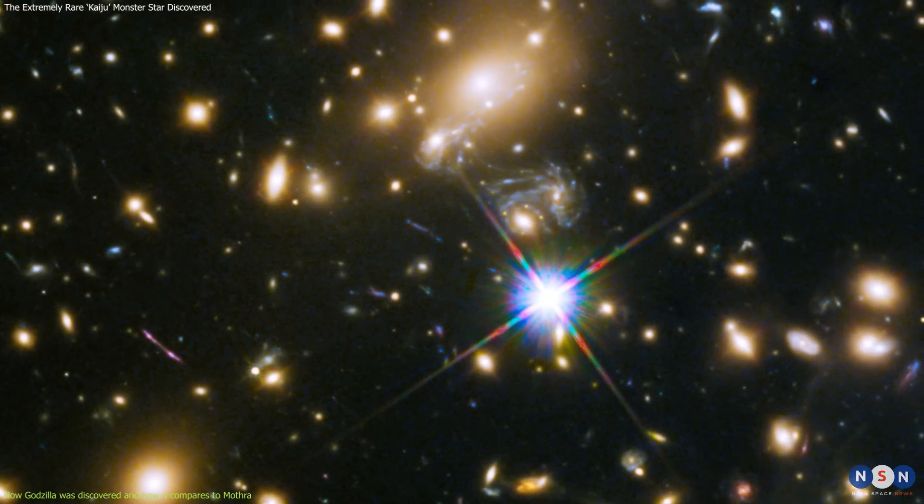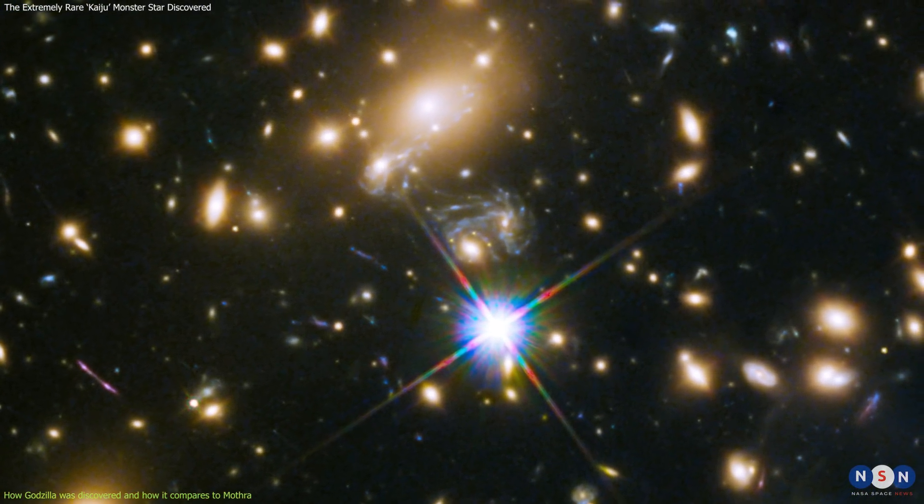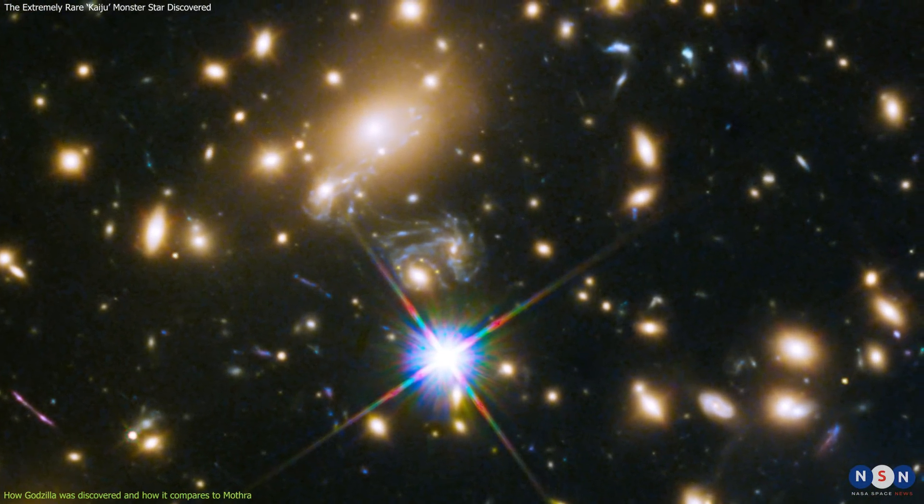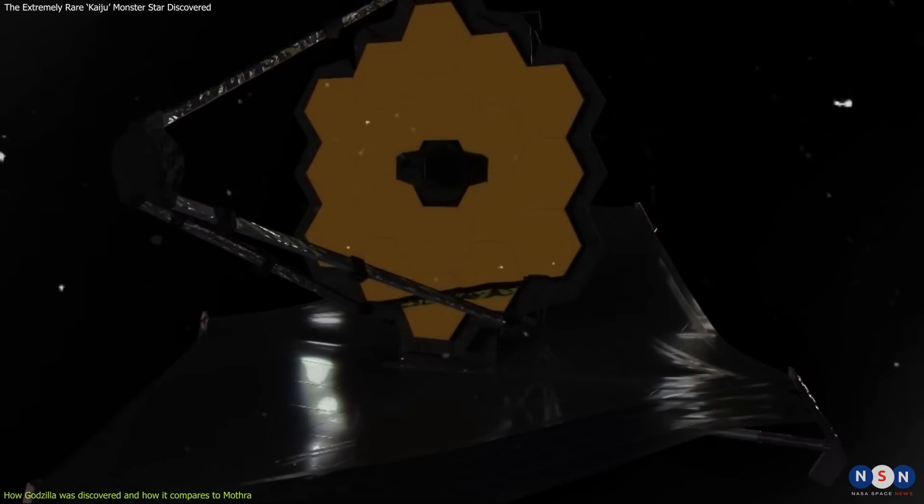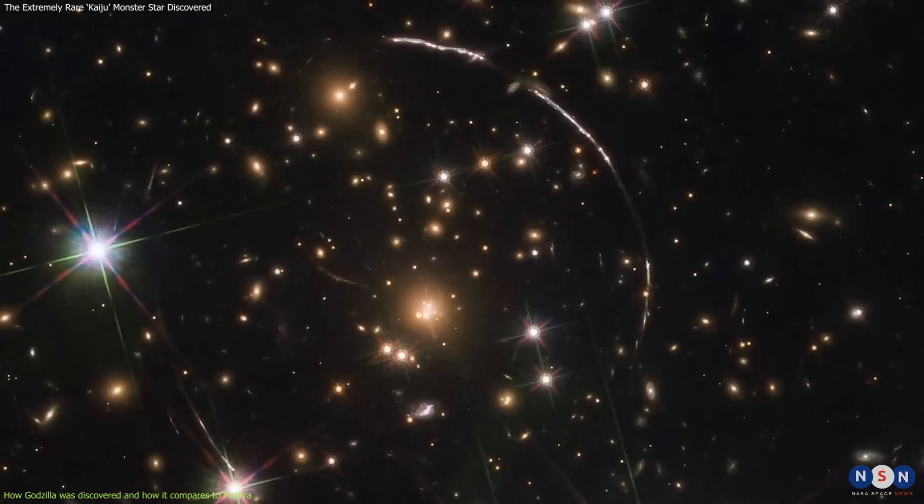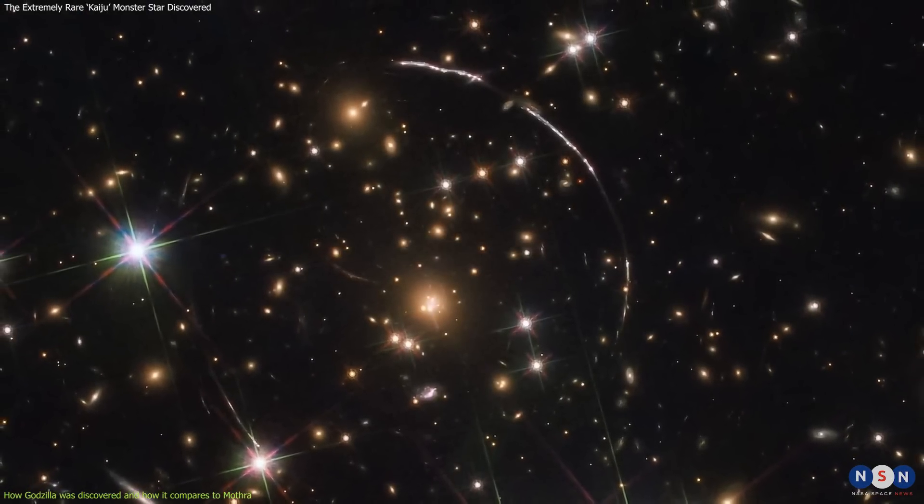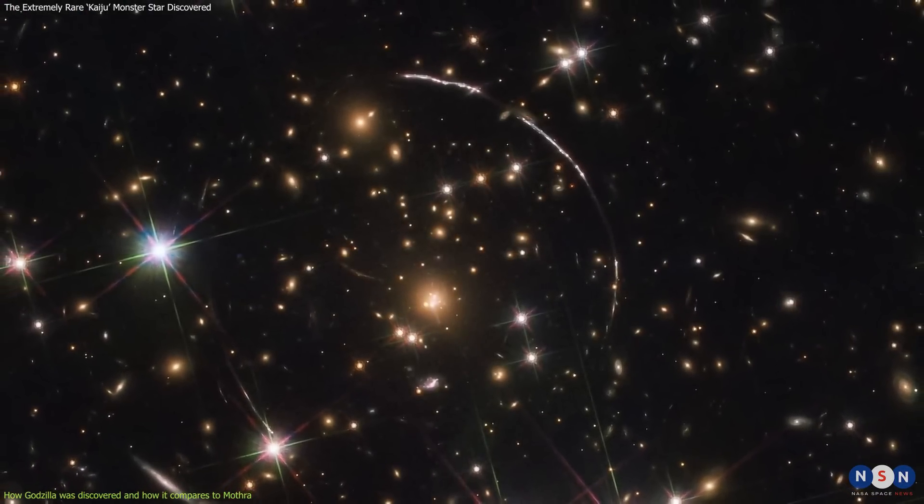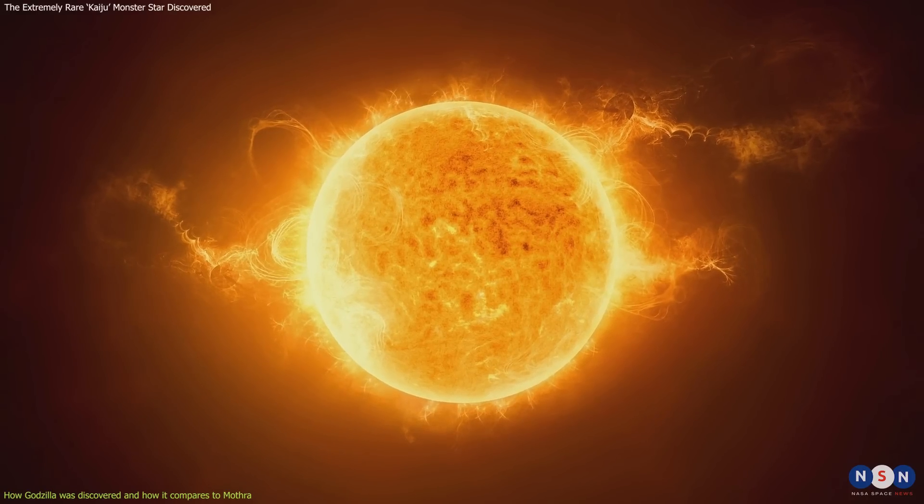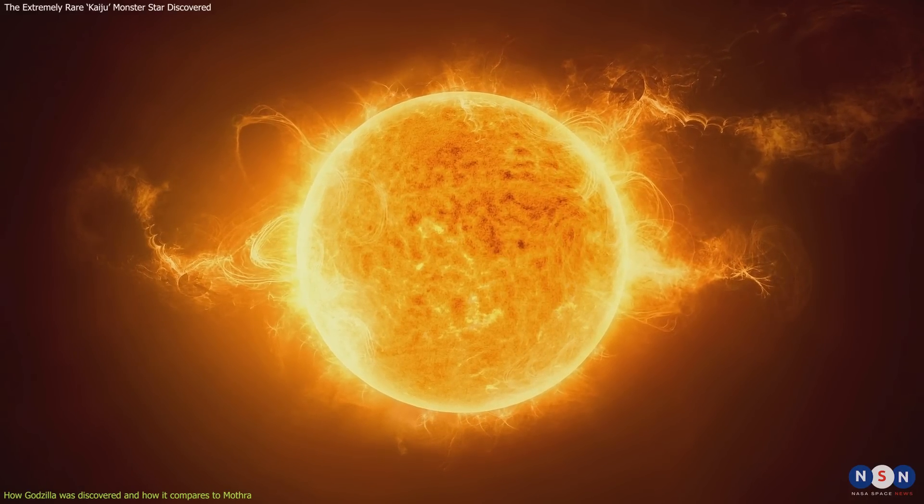This cluster acts as a natural lens that amplifies the light from Godzilla by about 4,000 times, making it visible to the James Webb Space Telescope. This star is even brighter than Mothra, making it one of the brightest stars ever observed in the universe.